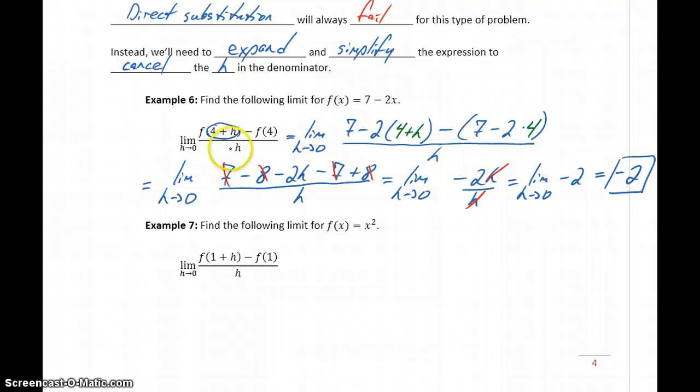Keep in mind that key is going to be getting that h in the denominator to somehow cancel out. And that will be our same goal that we have in the next example.